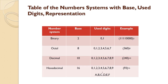Next is hexadecimal number system. Hexadecimal number system has a base of 16 numbers. The digits used are 0 to 9 and A to F. So 0, 1, 2, 3, 4, 5, 6, 7, 8, and 9 are the numeric digits, and A, B, C, D, E, F are the alphabets. Where A represents 10, B represents 11, C represents 12, D represents 13, E represents 14, and F represents 15. So the range is 0 to 9 and A to F.